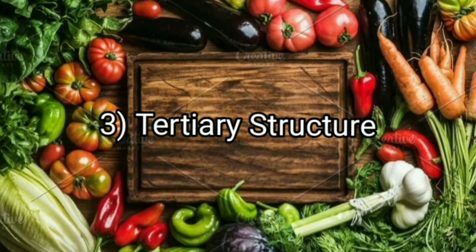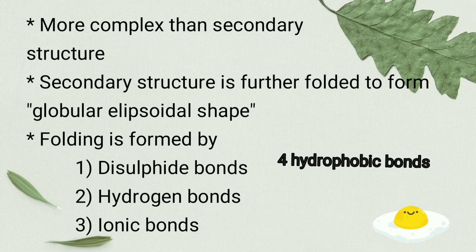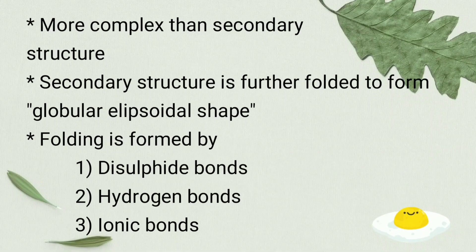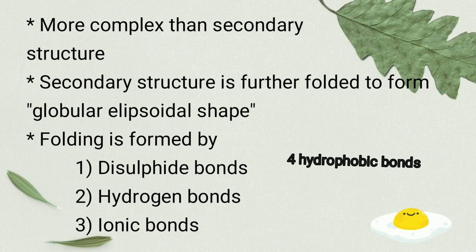Tertiary structure of protein: The tertiary structure of protein is formed by the combination or folding of secondary structures. As a result, a globular ellipsoidal shape is formed. The bonds present in tertiary structure are disulfide bond, hydrogen bond, ionic bond, and hydrophobic bond.